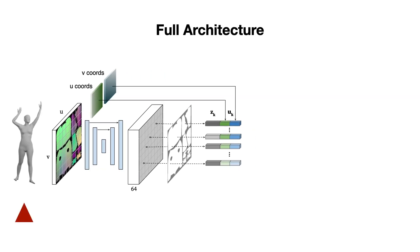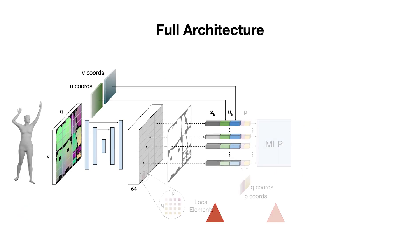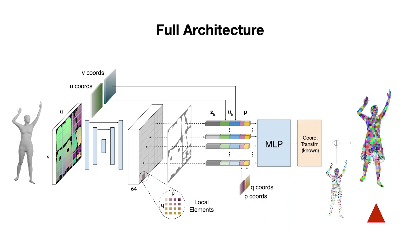Assembling these components together, our model for clothed humans takes in a posed body, encodes it into local features on articulated body locations, decodes them by deforming local elements into patches, and outputs a clothed body as a collection of such patches.